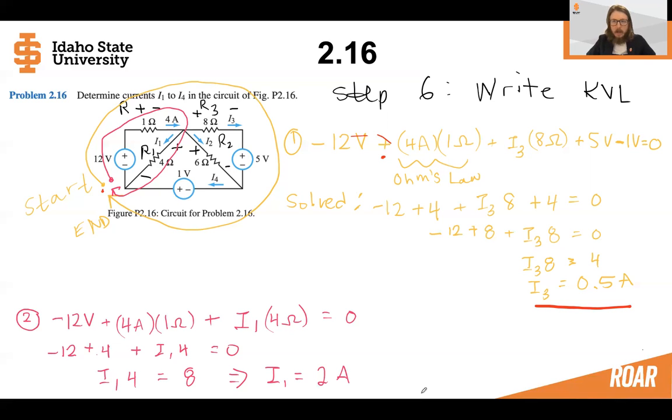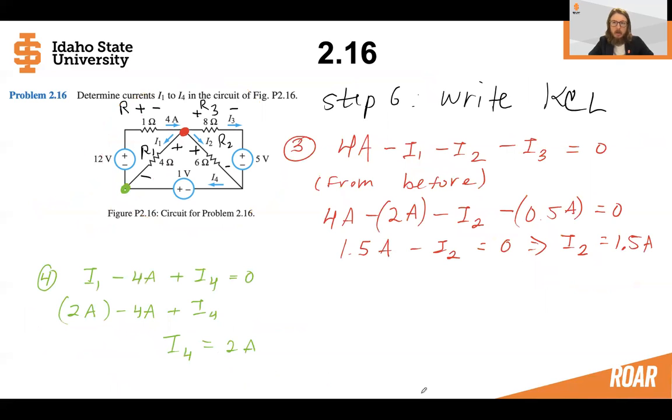Now we're out of KVLs that are one equation, one unknown. So let's write some KCLs, which is step seven. So remember, we had four equations and four unknowns. So let's finish out by writing two more equations to solve for those last two unknowns. We'll do this top node for the KCL where we have current four amps going in. So that's positive. And then we have three currents going out and we'll write those as subtractions. So four amps minus current I1 minus current I2 minus current I3. Then from before, we know current I1 and we also know current I3. So let's substitute them in or as we sometimes say, let's plug them in to this equation. And let's solve for I2.